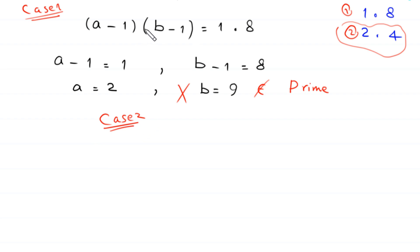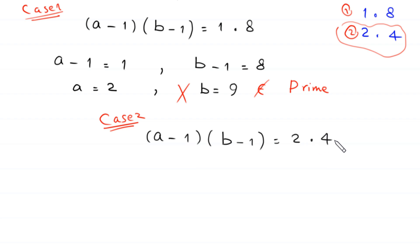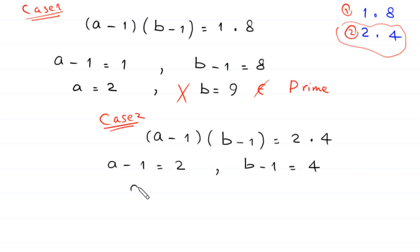In Case 2, we write (a minus 1)(b minus 1) equals 2 times 4. So a minus 1 equals 2 and b minus 1 equals 4. This gives a equals 3 and b equals 5. Both 3 and 5 are prime numbers, so this is a valid solution.